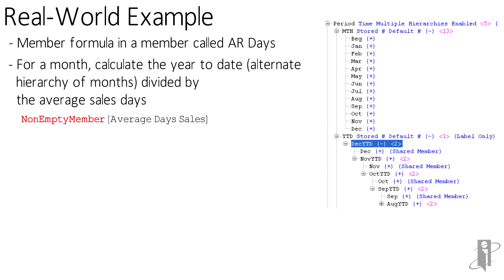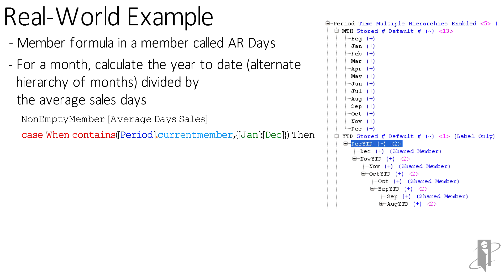First I'm using the non-empty member directive on average sales days — if I don't have average sales days then I don't want to do the calculation because it just doesn't make sense. So then I have a case statement: case when contains period current member, and I'm limiting this to January through December because in my year-to-date I don't have a beginning balance year-to-date member. In addition, it wouldn't make sense if I tried to do this calculation on one of the year-to-date members — if I tried to do it on December year-to-date, I'd end up with December year-to-date year-to-date.